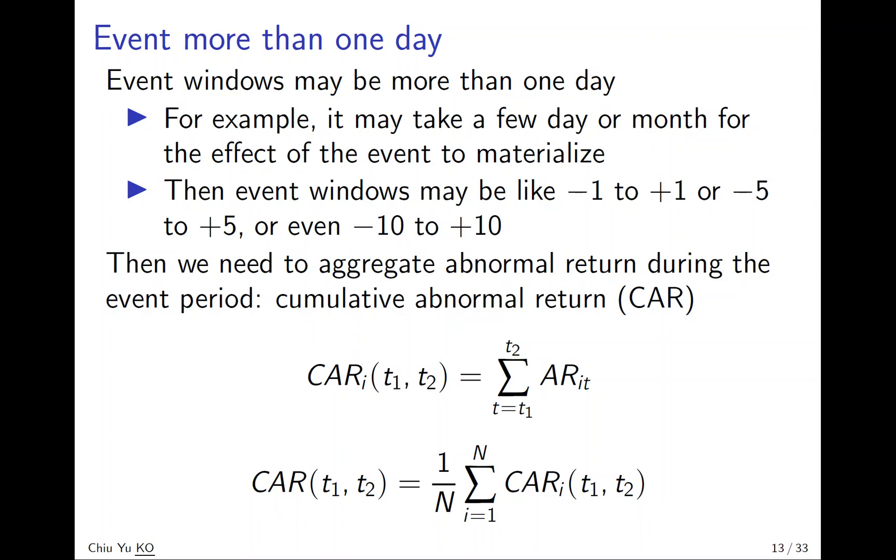Consider CAR of stock i from time t1 to t2 is summation of all abnormal return for the stock during this period. And then the abnormal return for all N stocks will be the average CAR of all N stocks.